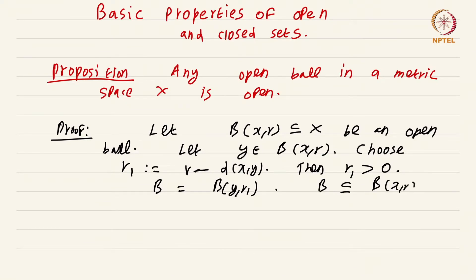In fact, to see this more precisely, let z be a point of B. Then d(x,z) will be less than or equal to d(x,y) plus d(y,z), which is less than or equal to r minus d(x,y) plus r, which is equal to r.